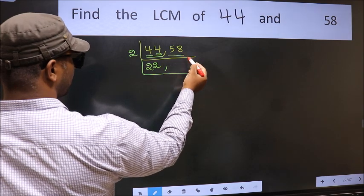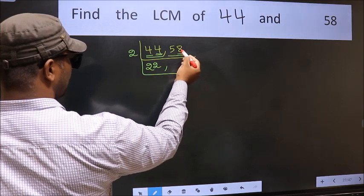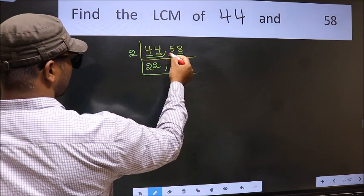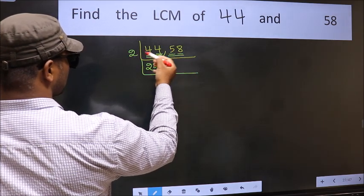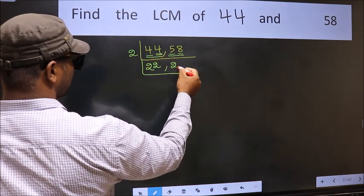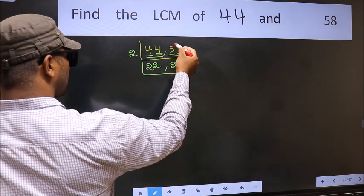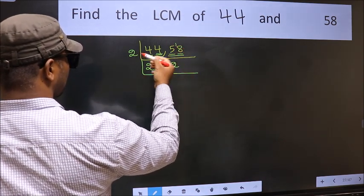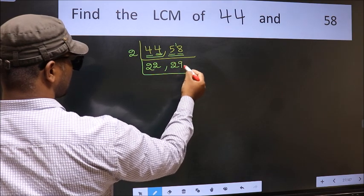Now the other number 58, last digit 8 is even, so this is divisible by 2. First number 5, a number close to 5 in 2 table is 2 times 2 is 4. 5 minus 4, 1, 1 carried forward 18. When do we get 18 in 2 table? 2 times 9 is 18.